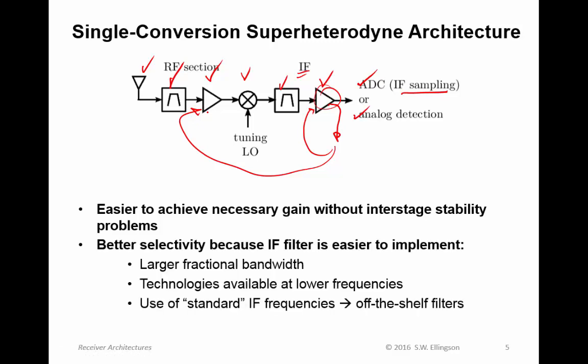We also have better selectivity because the IF filter is easier to implement — the fractional bandwidth at IF is greater than at RF, allowing a more selective filter. Furthermore, we have more technology options at lower frequencies, with many low-cost filter implementations available. And it facilitates the use of standard IF frequencies — the industry has gravitated toward a limited number of IF frequencies, meaning there are many off-the-shelf filters available for those particular frequencies.